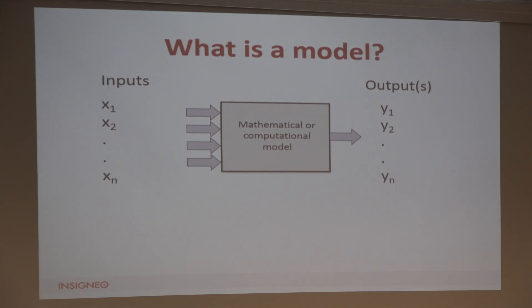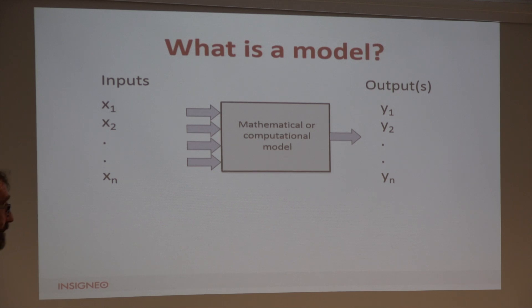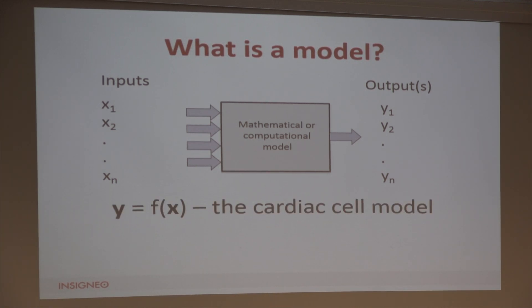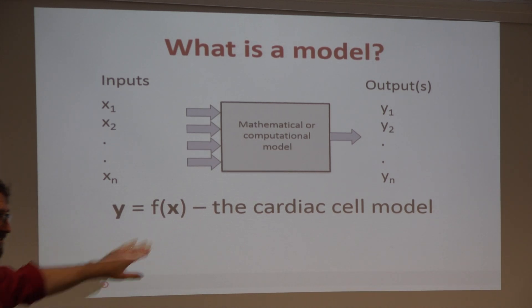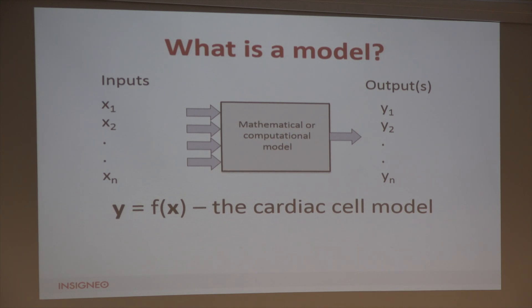First of all, what is a model? In terms of a mathematical or computational model, we always have some kind of inputs — whether they're parameters, initial conditions, boundary conditions, or numerical parameters — and we turn those inputs into outputs. We've got a vector of inputs typically referred to as x, and a vector of outputs typically referred to as y. For a cardiac cell model we can write this as y = f(x), turning our inputs into outputs using a system of ODEs.